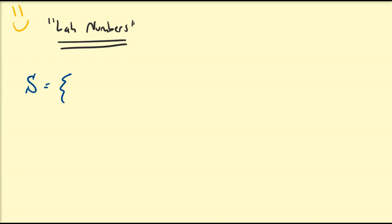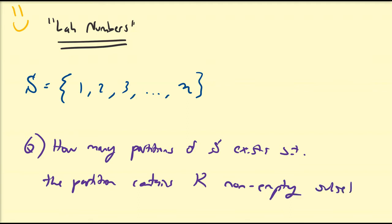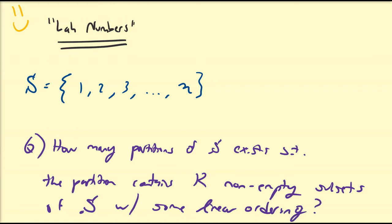We're going to consider a set of distinct objects, and I'm going to label those objects 1, 2, 3, and let's assume that the set is finite and goes up to n. The question that the Lah numbers will answer is: how many partitions of S exist such that the partition contains k non-empty subsets of S with some linear ordering? We're going to go through this definition in detail, and also go through a few examples and a couple properties of these Lah number sequences.